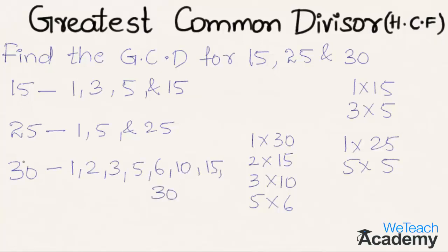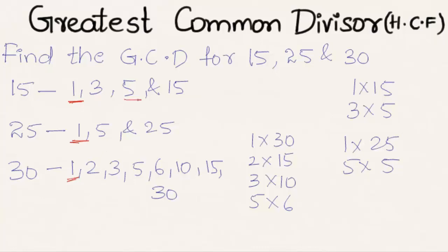Now let us find the common factors of the given numbers. The first factor 1 is common. Coming to the next factor 3, it is not common. The next factor 5 is common. So the common factors are 1 and 5, and the greatest among them is 5. So 5 is the greatest common divisor for the given numbers.